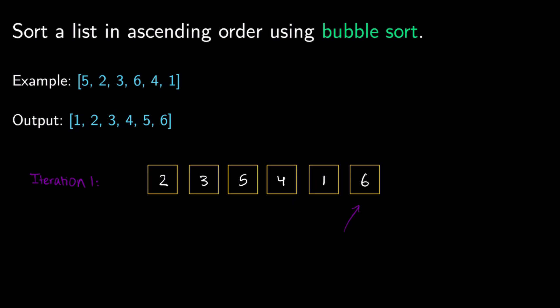If we perform a swap in any iteration, it makes sense to go through another iteration to make sure the list is sorted, because we may have to continue swapping consecutive elements. But if we go through an entire iteration without finding any swap, the list is sorted — every element was already where it was supposed to be. So we indicate there was a swap and move on.